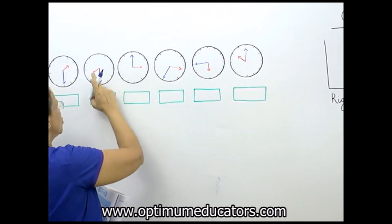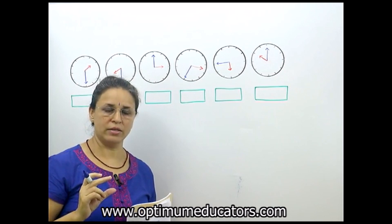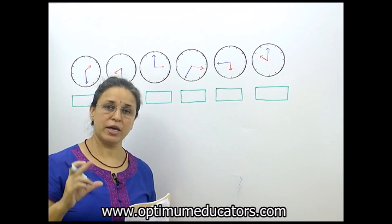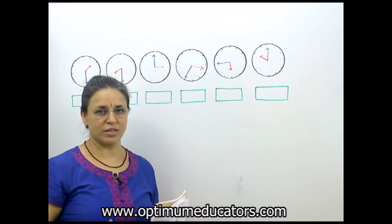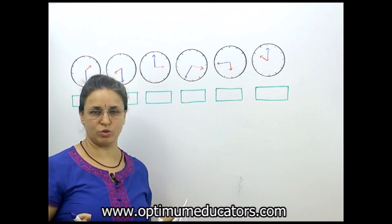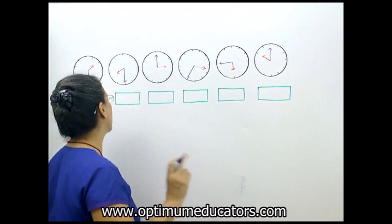have given you two different colors. I have given you the hour hand, that is the small one, in red, and the big hand, that is the minute hand, in blue. Of course you can tell the time also, but here we don't have to tell the time. Here we have to tell only what is the angle.